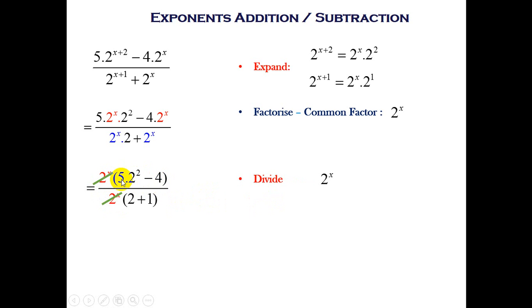Simplify the brackets. It's 5 times 2 squared. 2 squared is 4, so 5 times 4 is 20. And 20 minus 4, which I've indicated in the next step, 20 minus 4. 2 plus 1 is 3. 20 minus 4 is 16. And that gives us 16 over 3.